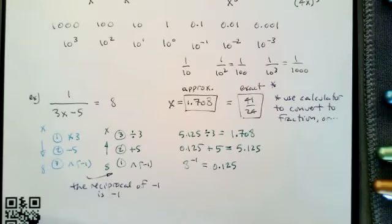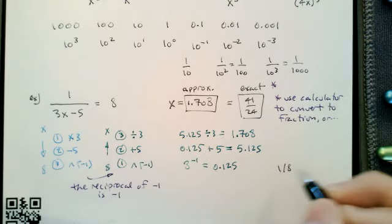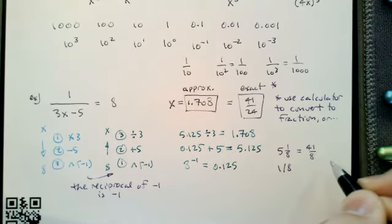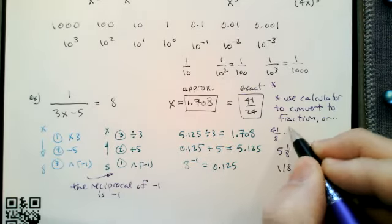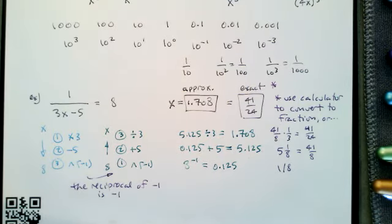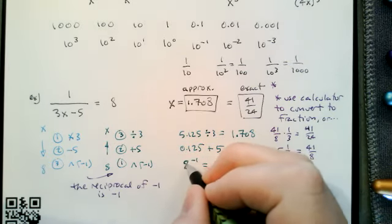We can also do this without a calculator: 8 to the negative 1 is 1/8. Then add 5 to get 5 and 1/8, which is 41/8. Dividing by 3 means multiplying by 1/3, giving 41/24. So if you're stuck without your calculator, fractions are here to help.